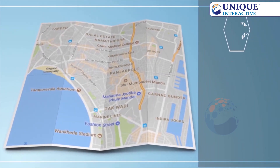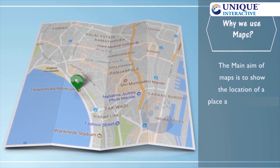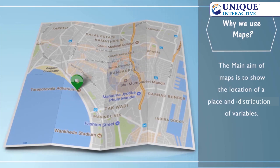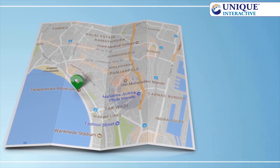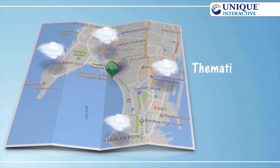The main aim of maps is to show the location of a place and the distribution of variables like rainfall. Some maps are prepared with special themes, like rainfall in our example. Such maps are called thematic maps.